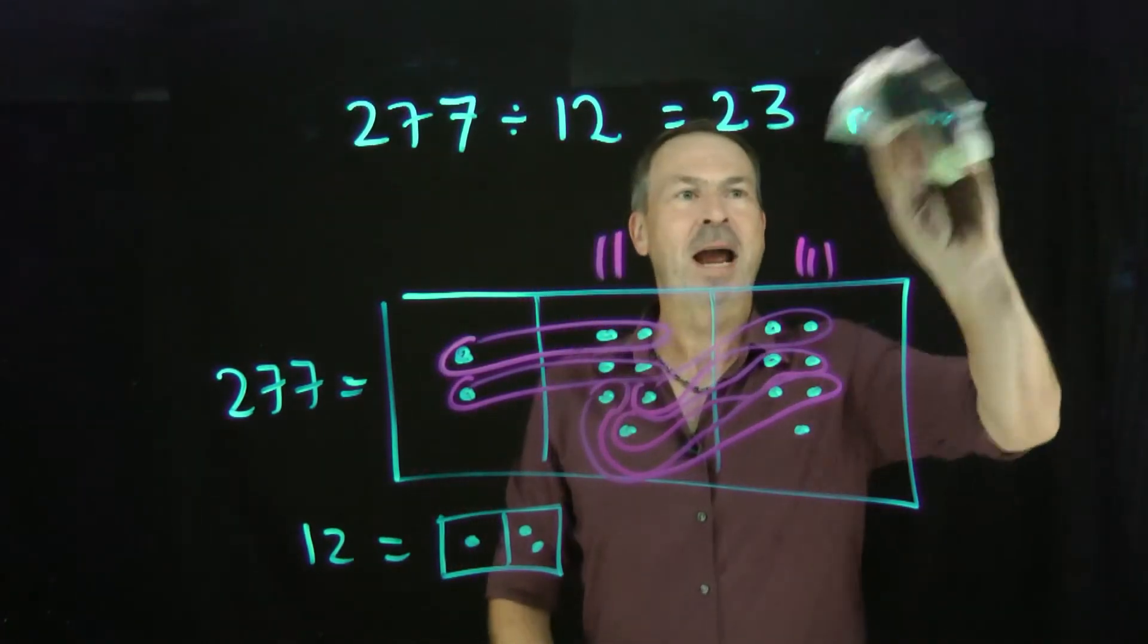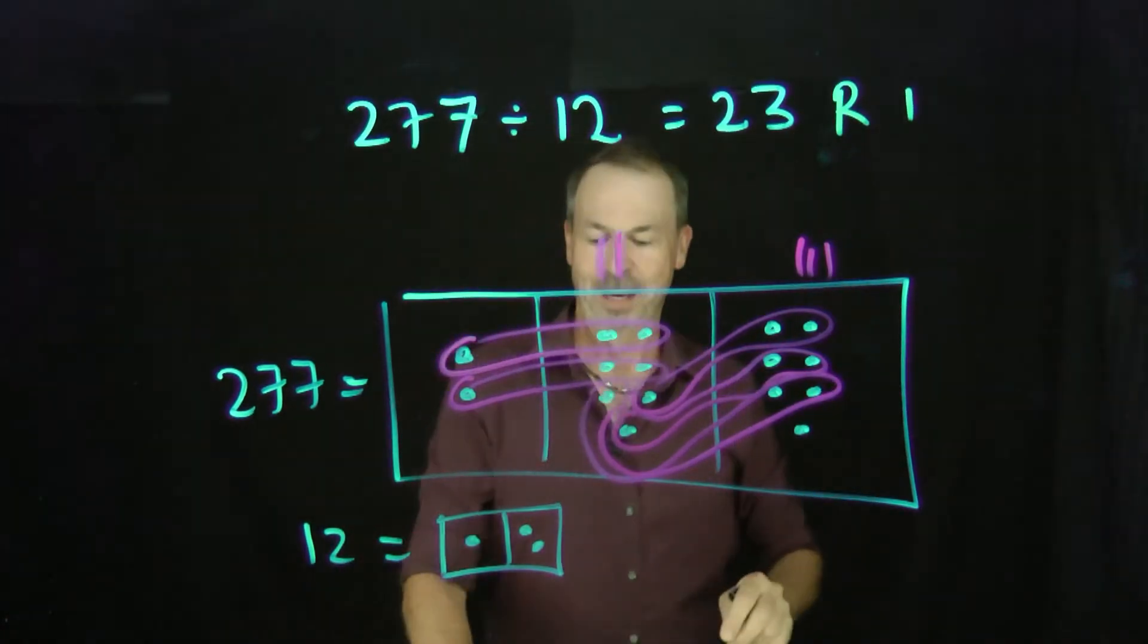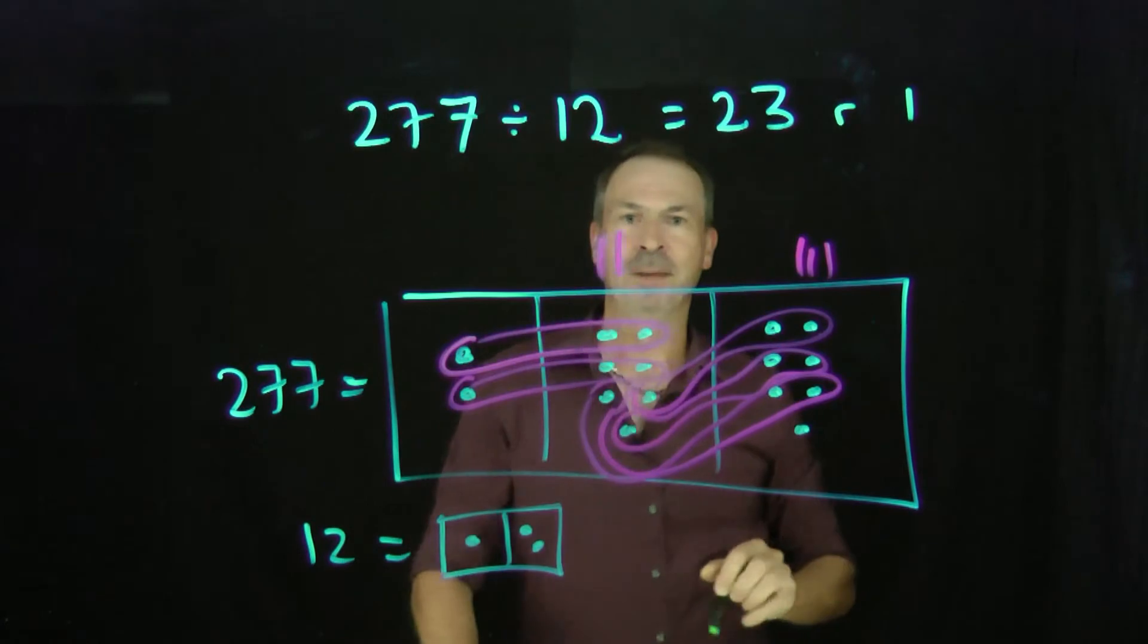Now different people write remainders in different ways. I think most people in the US use a capital R, remainder 1. I think in Australia I was taught to write a little r, 1. But actually, here's the real math answer.